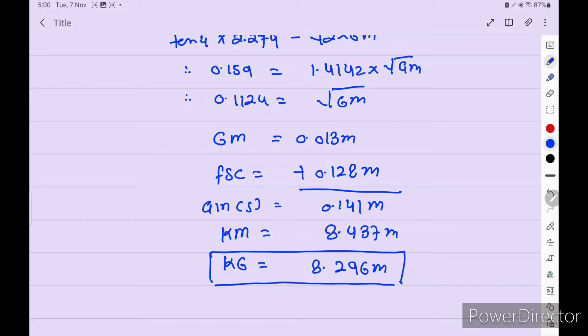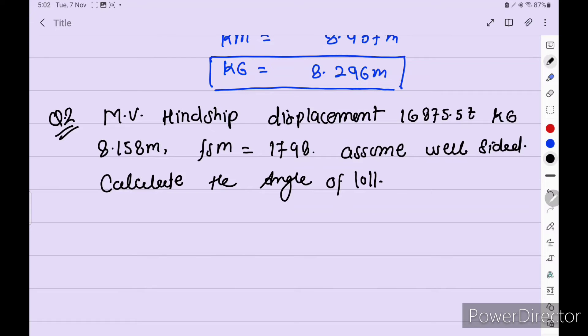So KG is equal to 8.296 meter. So this is our answer. Okay. Next move. Let's move to the next question. So our next question is MV Handship displacement, 16875.5 tons. KG is 8.158 meter. FSM 1798. Assume well sided. Calculate the angle of loll. Here we have to calculate angle of loll. The first question we calculate the KG.